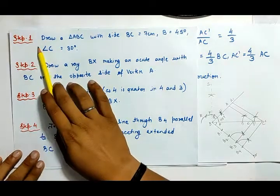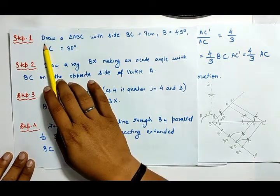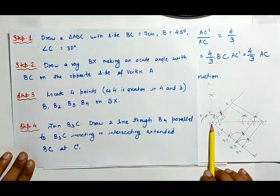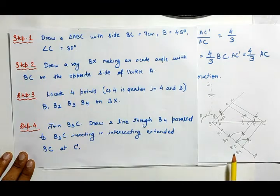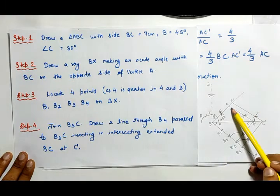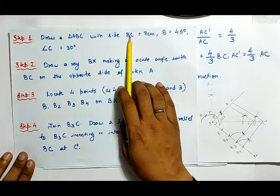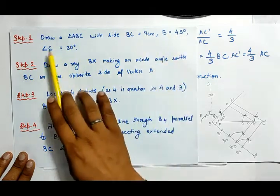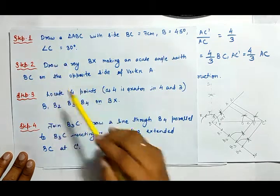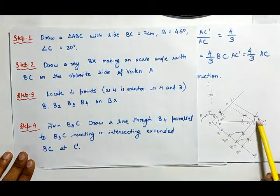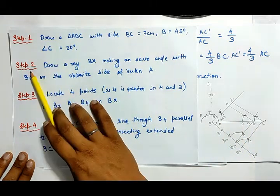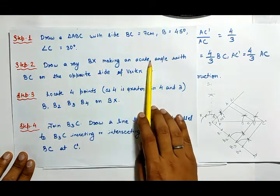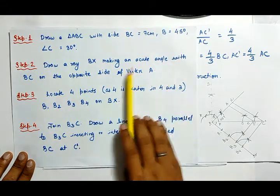The required triangle can be drawn as follows. Step 1: draw a triangle ABC with side BC equal to 7 centimeters, angle B equal to 45 degrees, and angle C equal to 30 degrees. Step 2: draw a ray BX making an acute angle with BC on the opposite side of vertex A.